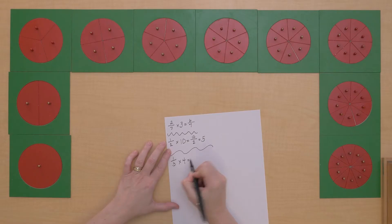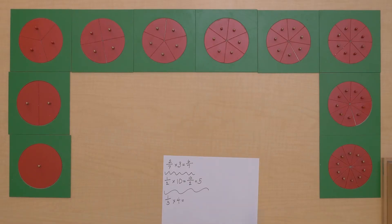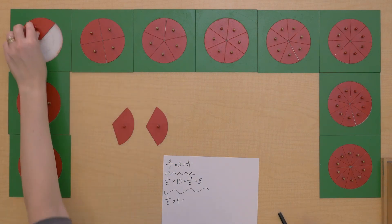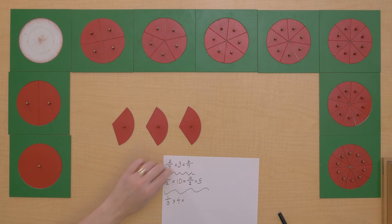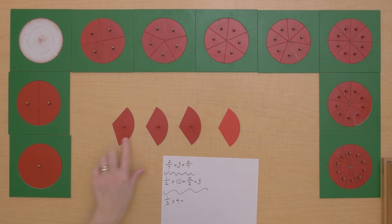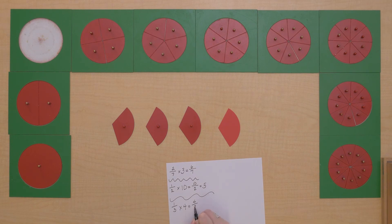Let's do 1/3 times 4. So here's 1/3 one time, 1/3 two times, 1/3 three times, and 1/3 four times. So that all together is 4/3.